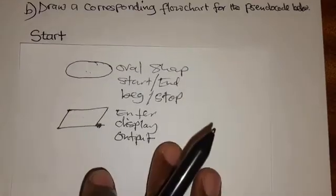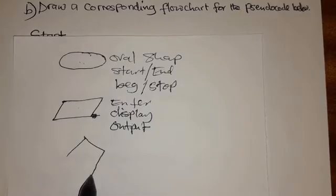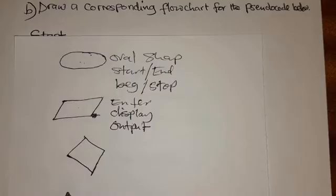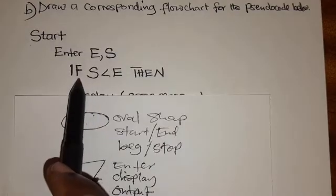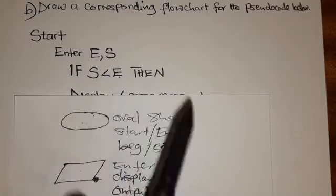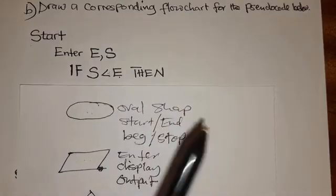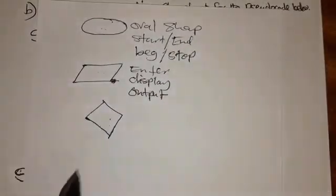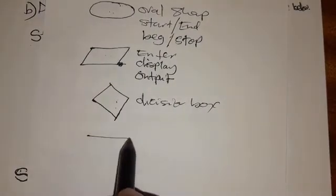The next shape is the diamond, which is called the decision box because this is where the computer makes a decision. For example, 'if S is less than E, then' — this is where the computer will make a decision, and you use a diamond for that.